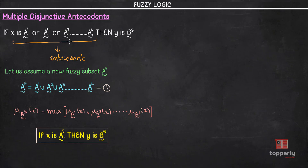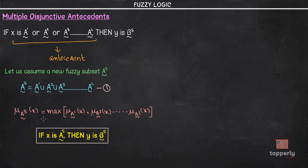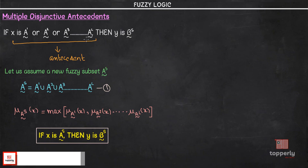This entire condition constitutes the antecedent. So once again, we assume a new fuzzy subset As, where As = A1 ∪ A2 ∪ A3 ∪ … ∪ Al. The membership function of As can be represented as: μ_As(x) = max(μ_A1(x), μ_A2(x), …, μ_Al(x)). Since we are using the union operator, we take the maximum of all values to get the membership function of As. Combining this equation with the expression, the compound rule is rewritten as: if x is As, then y is Bs. This is the case for multiple disjunctive antecedents.